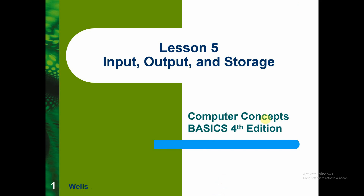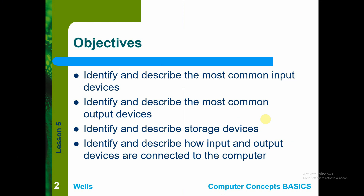Okay, lesson five. This is for the input, output, and storage unit and other related peripheral devices that we use for our computer PC systems. The objective is to identify and describe the most common input devices as well as the output devices, and identify the storage devices and how input and output devices are connected to the computer and how their interactions are maximized and utilized.